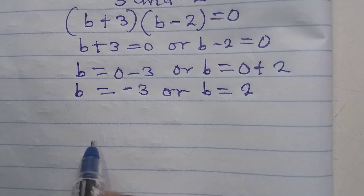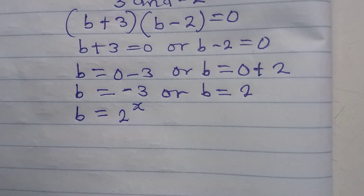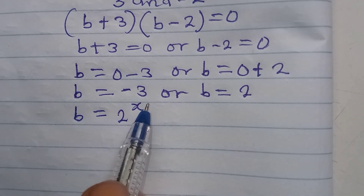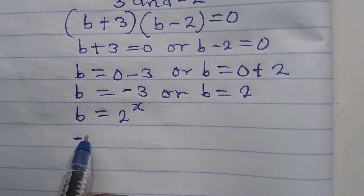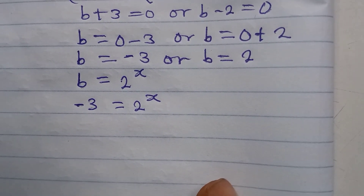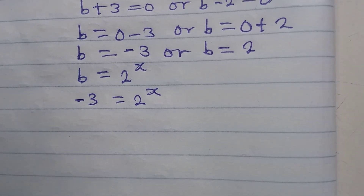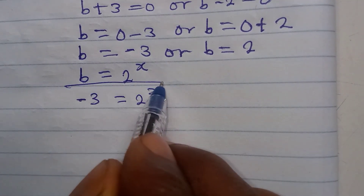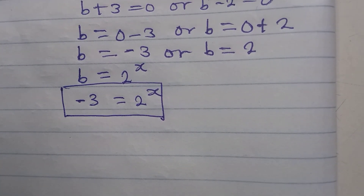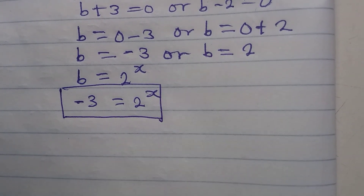When b equals minus 3, that means 2 to the power of x equals minus 3. But is it possible that 2 raised to any power gives minus 3? No, it's not possible. So this solution is rejected because it is not real.